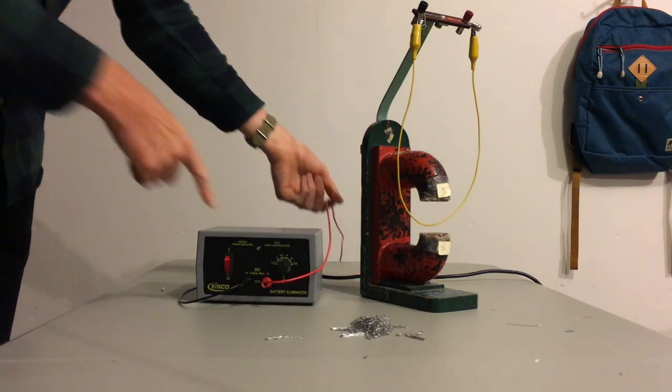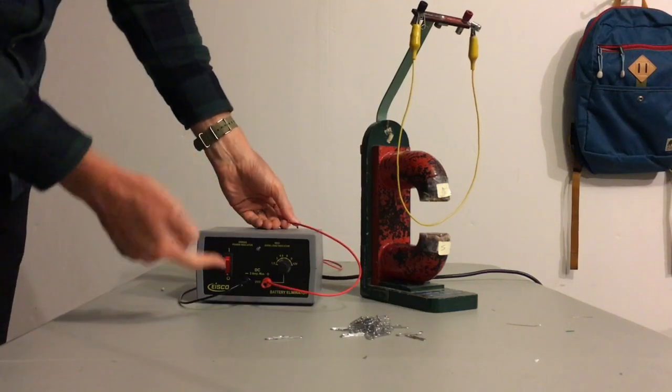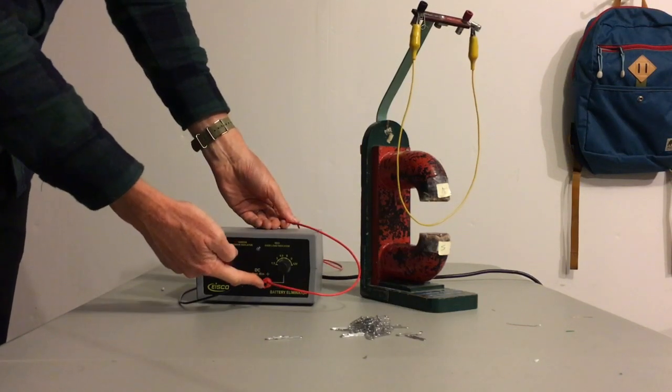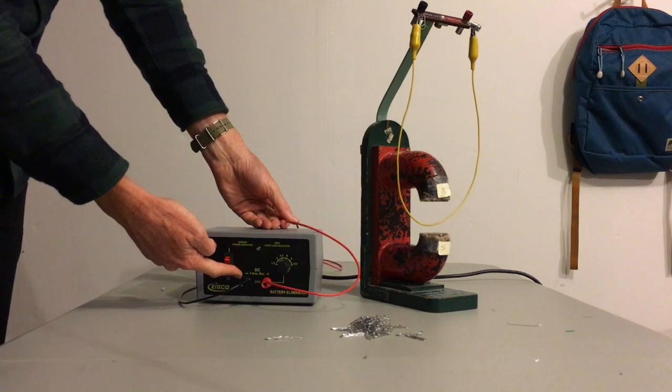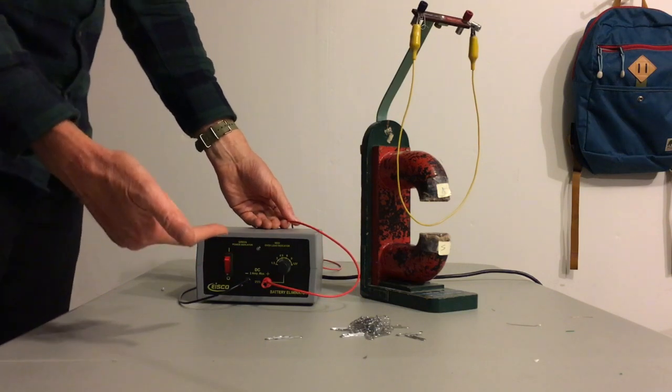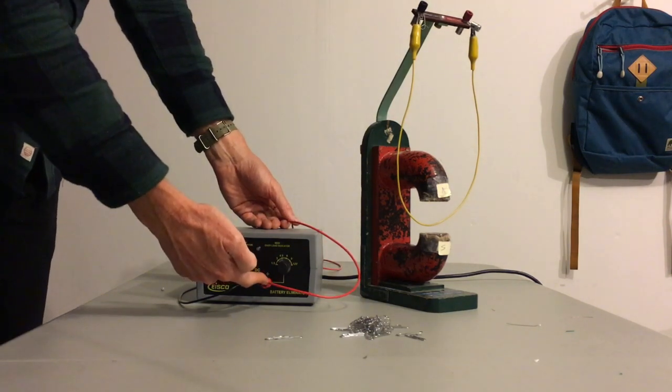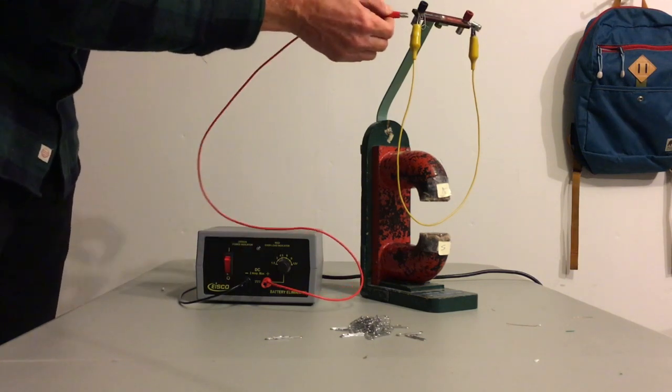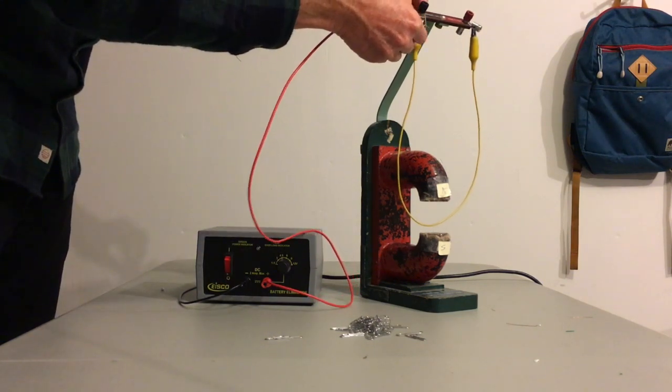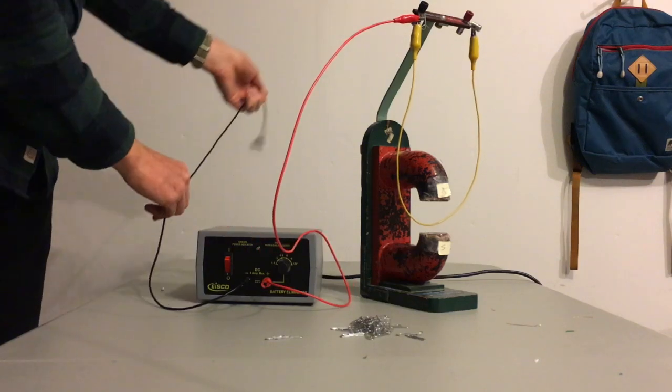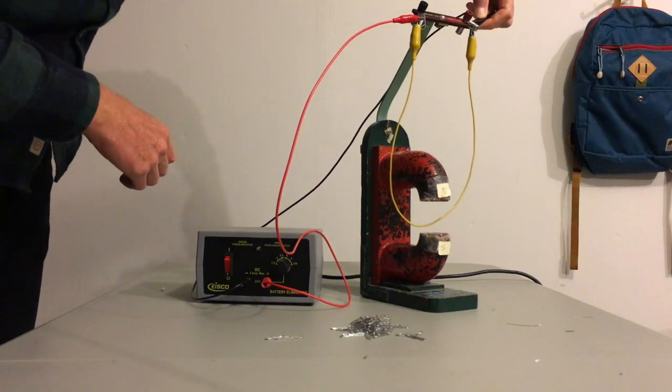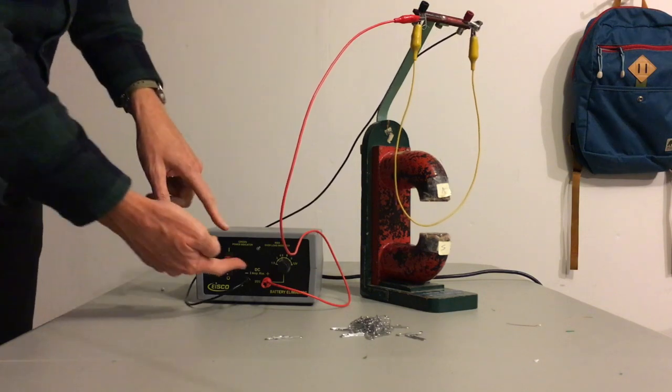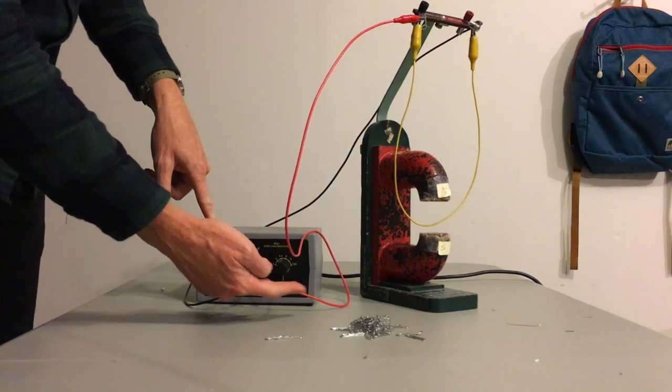To do that, I'm going to connect it to this power supply over here. The power supply has a positive terminal here on the red and negative terminal here on the black. Conventional current always flows from positive to negative. So I'm going to attach the red end to this side of the yellow wire and the black end to the other side. And this means that current is going to flow out of the positive terminal.